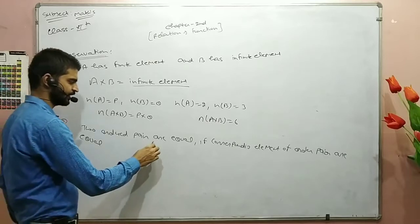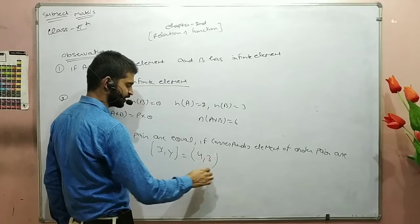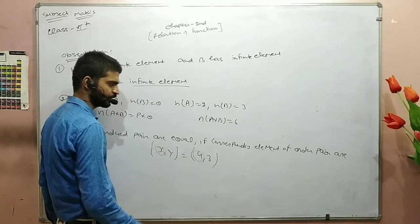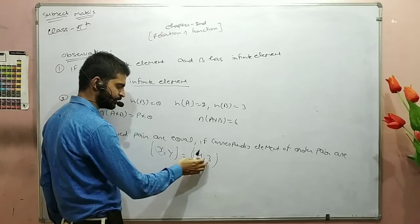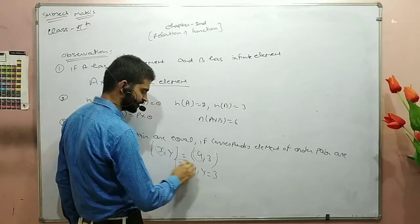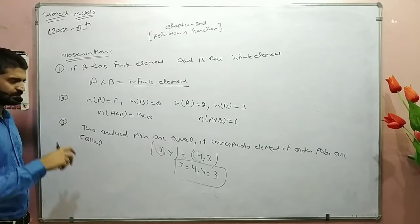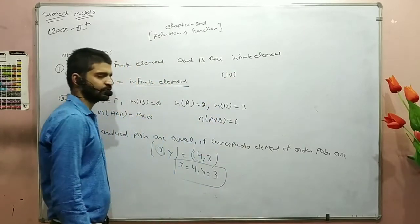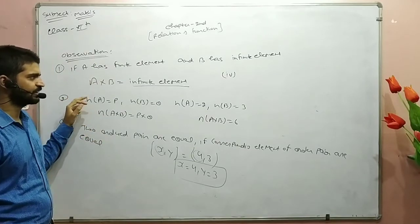What do we see here? Our two ordered pairs are (x, y). This is equal to (4, 30). Here we see the two ordered pairs — the first element equals the first, and the second equals the second. This is how A cross B is defined, and a cross B is a finite element.